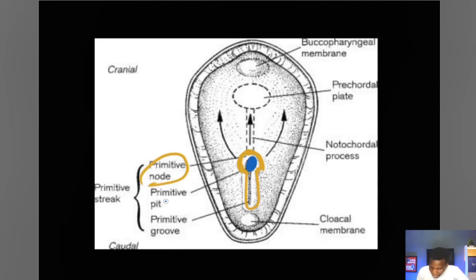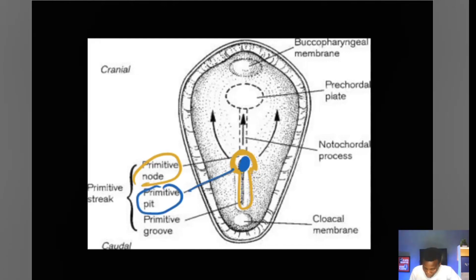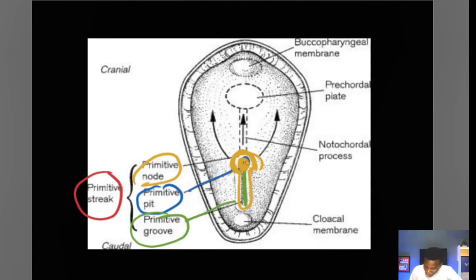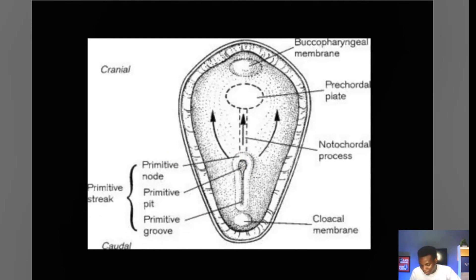Within the primitive node lies something called the primitive pit. The rest of this groove along the primitive streak is simply called the primitive groove. So you can have any of these areas pinned — they may paint the area and ask 'what's this primitive node?', insert a paper into the pit and ask 'what's the primitive pit?', or ask about the primitive groove. It's quite direct.